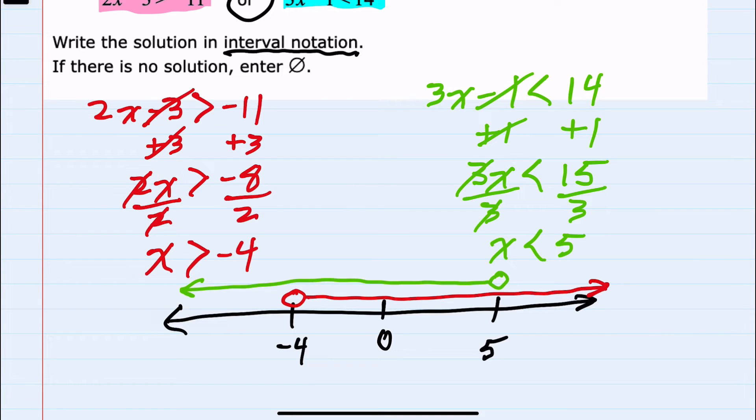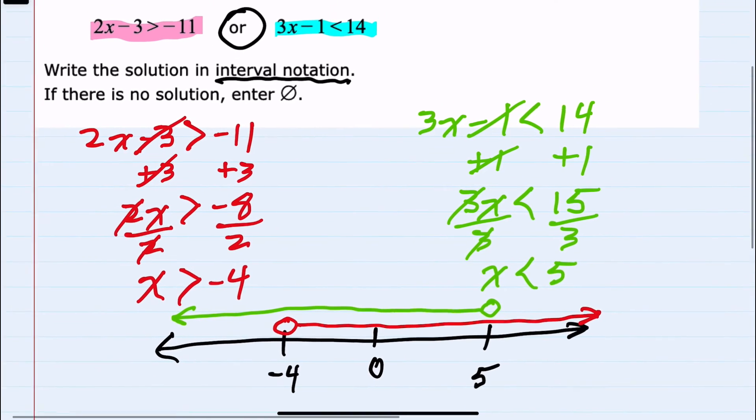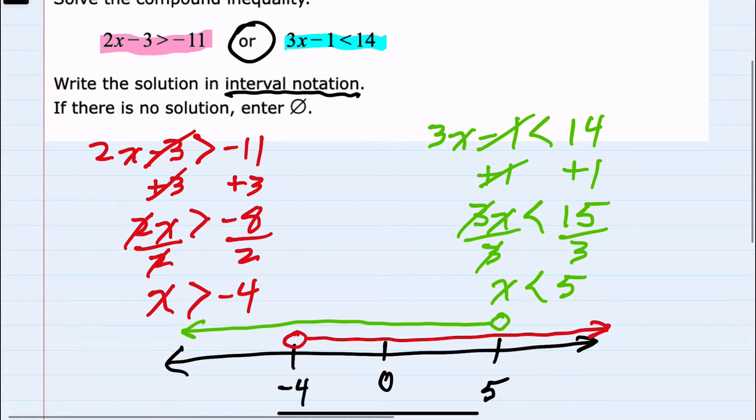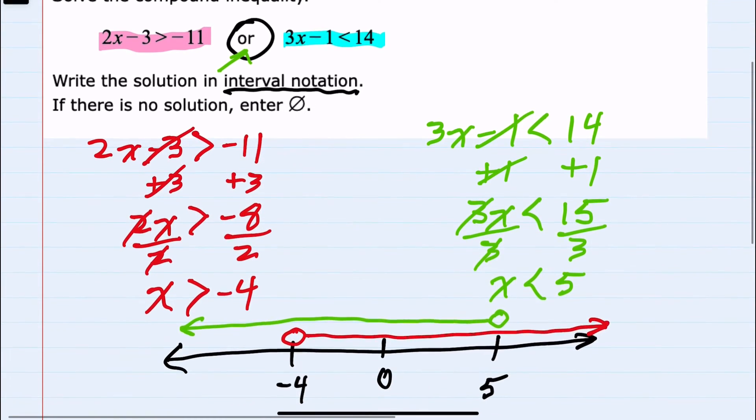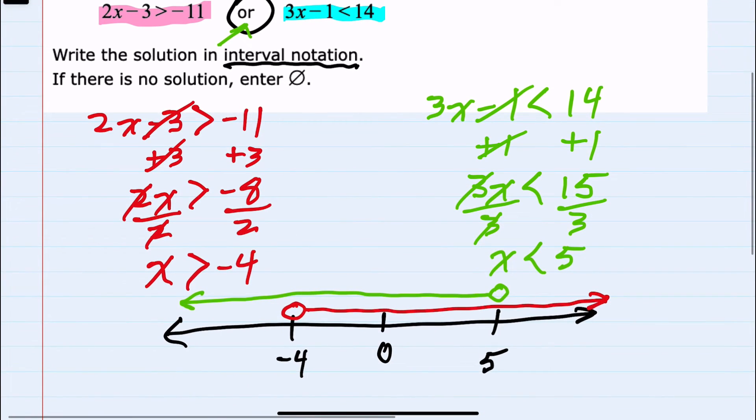And this is where, had this been an AND statement, I would be looking for where they overlap between negative 4 and 5. But since it is an OR statement, then OR would be everywhere that either of these two exist.